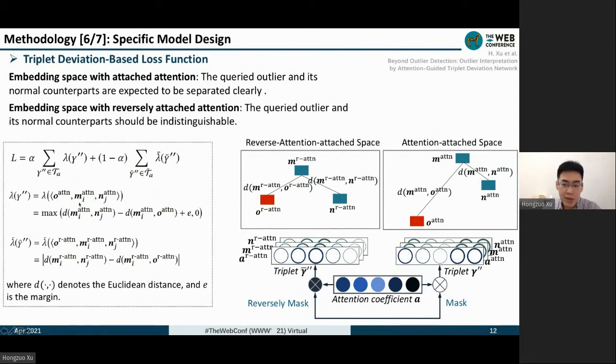This triplet loss term uses a relative concept of separability rather than an absolute manner. It provides a reference score, a reference distance between normal data, which can help us judge whether the query outlier is effectively isolated.